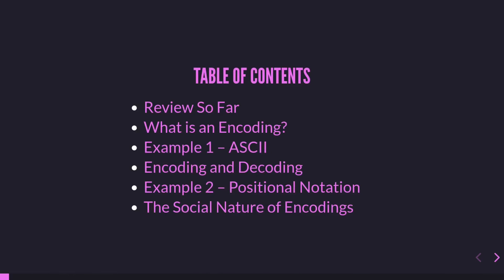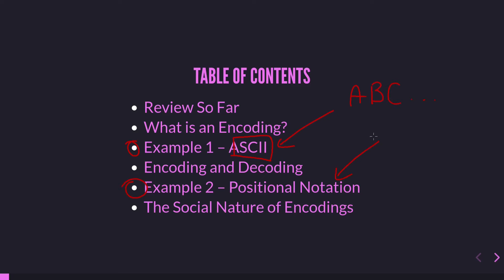In this video we will talk about encodings. The table of contents: we will do a review of previous content, then talk about what is an encoding. To describe the concept I'll give two practical examples — one is the ASCII encoding, used to represent letters of the alphabet, and the other is positional notation, used to encode numbers. I'll also talk about encoding and decoding operations and the social nature of encodings.